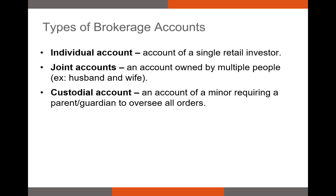There are several types of brokerage accounts you can open. As an individual, you can open an individual account. Once I got married, I opened a joint account with my wife. Joint accounts allow both parties to access the funds and trade on those accounts. A custodial account is an account for a minor that requires a parent or guardian to be involved in all transactions — great if you have a teenager who wants to learn about investing.